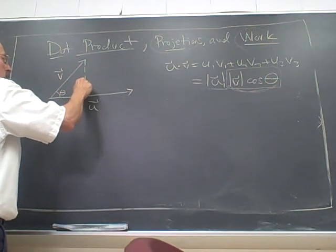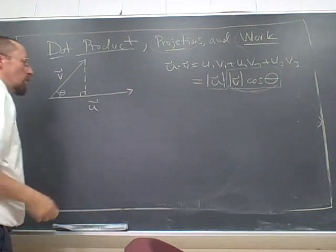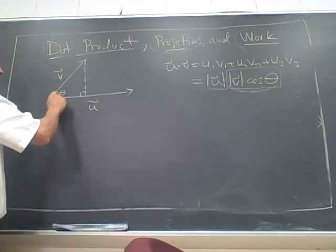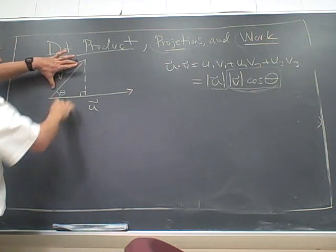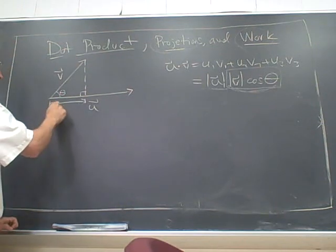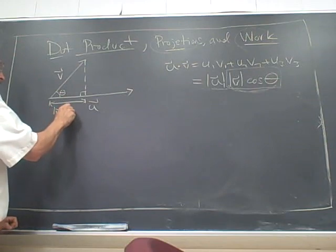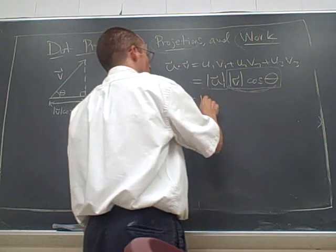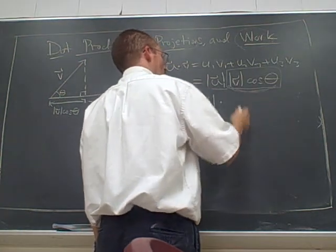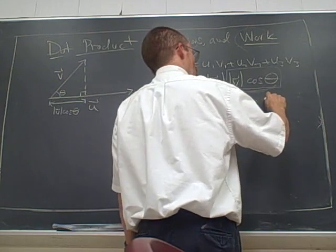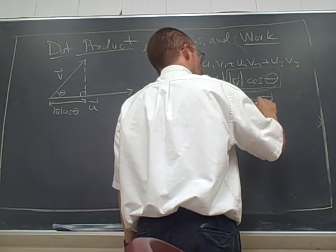If I just drop the altitude here, drop a 'tude as they say, then this is a right triangle and hypotenuse times cosine theta is exactly that length. So that's magnitude of v cosine theta. And so what this is, is it's the magnitude of u times, and we'll use the book's notation for this, it's the component of v in the direction u.